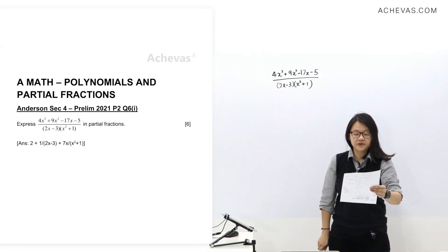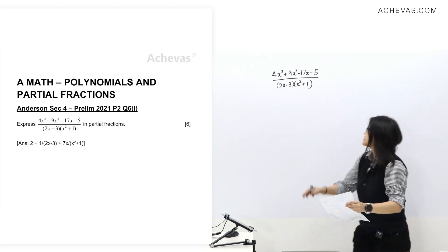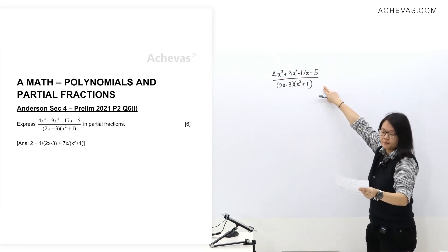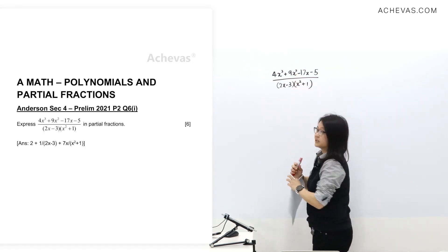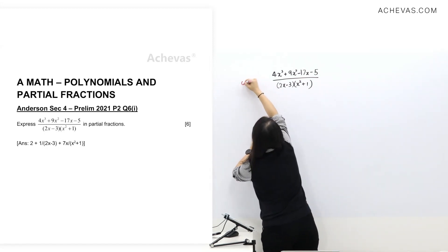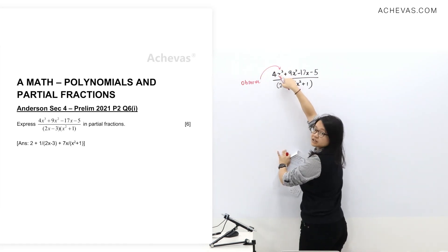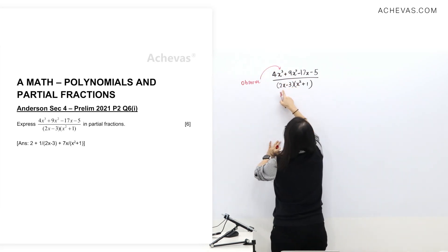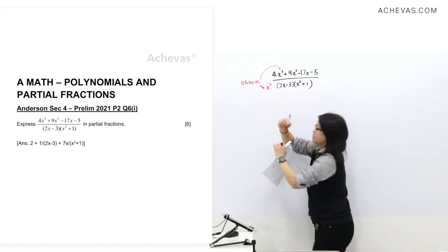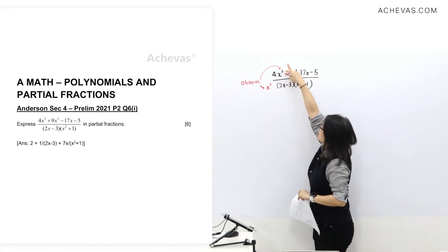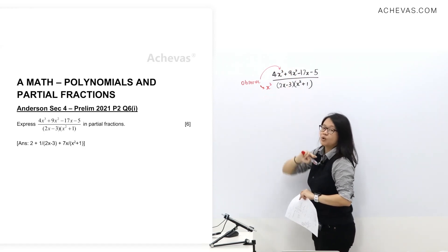Now let's take a look at Anderson Sec 4 Prelim 2021 Paper 2 Question 6. Express these in partial fractions. Before we start, let's observe the terms in the numerator and denominator. We'll see that the highest term is x³, and if you expand the denominator, it will have a term in x³ as well. As long as the numerator term is the same or higher, step one will be long division.